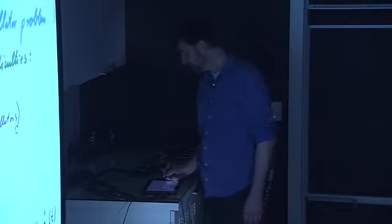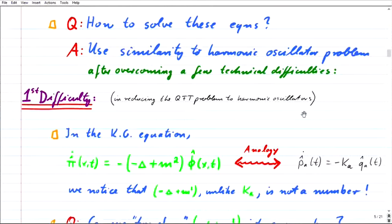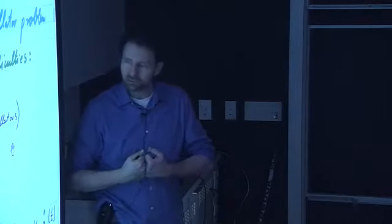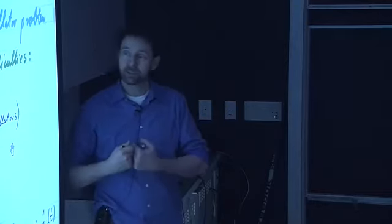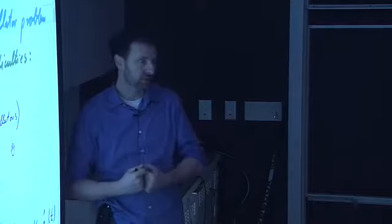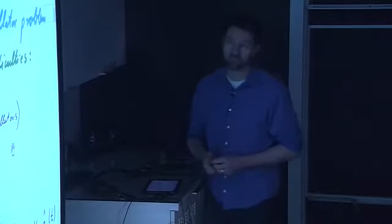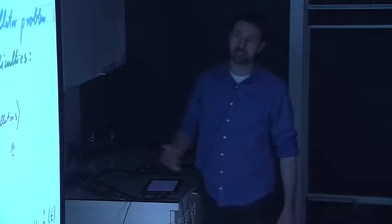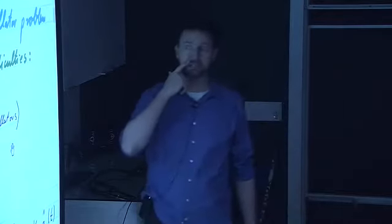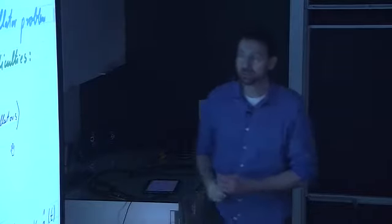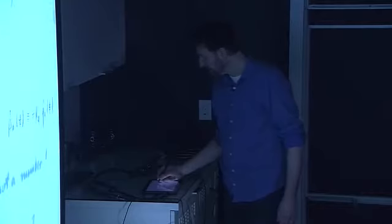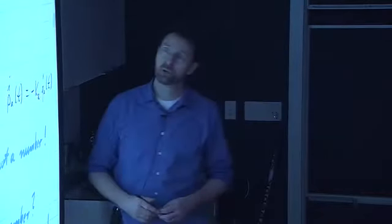So how to go about solving these two equations? The idea mostly used is to proceed in analogy with harmonic oscillators. But even though the analogy is pretty close, there are a few things that need to be ironed out until we can really reduce the problem to a bunch of harmonic oscillators. There are three main difficulties, and each one of them comes up in quantum field theory — especially in quantum field theory on curved space — all the time.